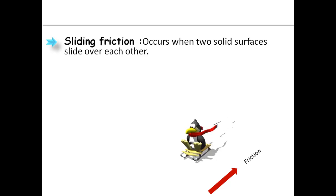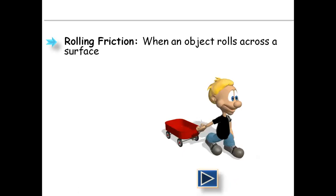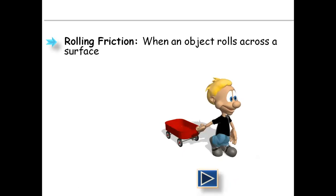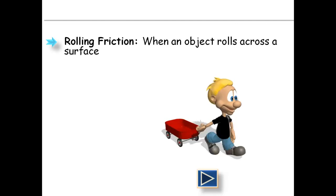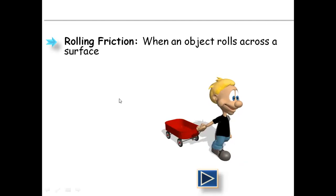What is rolling friction? When a body or object rolls across a surface — like it rolls over the surface — that is rolling friction. Rolling friction is the friction experienced by the body when a ball or rollers are interposed between two surfaces. That is known as rolling friction.